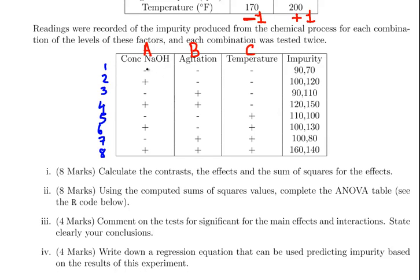At the low level, we have two replicates at each of the treatment groups. Overall, the sample size is 16. That's the number of measurements we have altogether. For example, at treatment group 5, the low level of concentration, the low level of agitation and the high level of temperature, we get two measurements: 110 and 100.